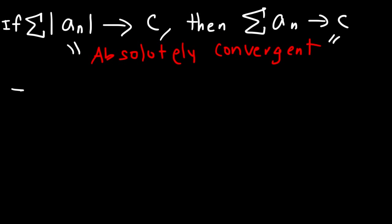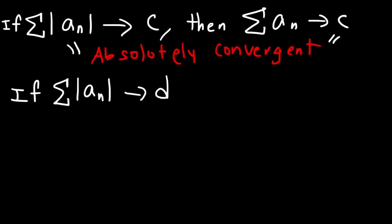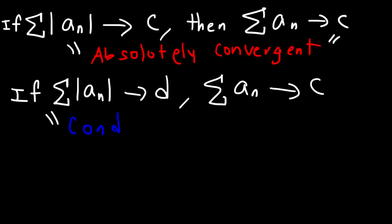Now, if we analyze the absolute value of the series and find it to be divergent, what should we do? In this case, we need to analyze the original series. If we analyze the original series and find it to be convergent, that means the original series is conditionally convergent.